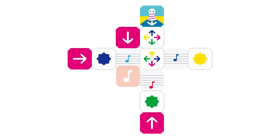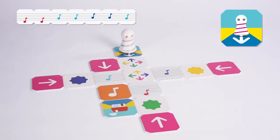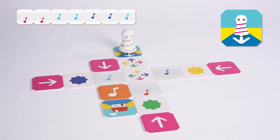The music note panel is only one for each music note. How do you arrange the panels? Were you able to arrange the panels to pass through the music note panels in order of C, C, G, G, A, A, G, DO, DO, SO, SO, LA, LA, SO?